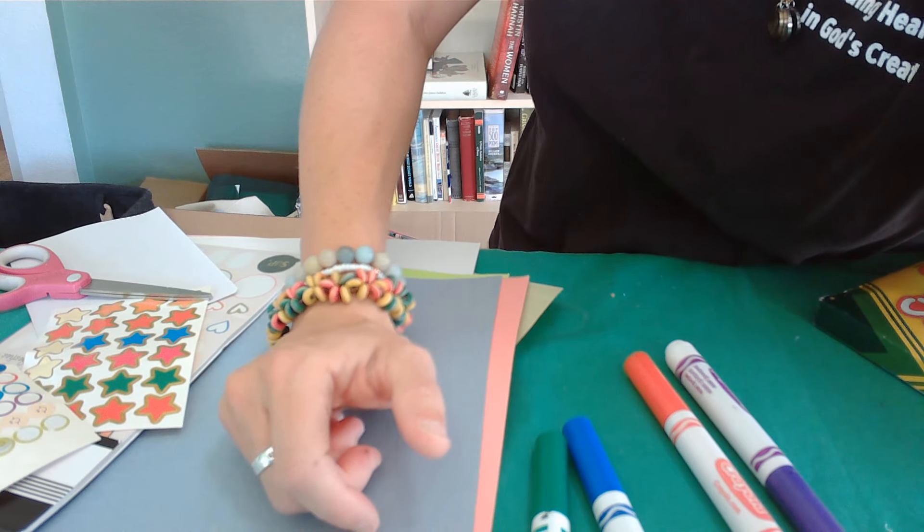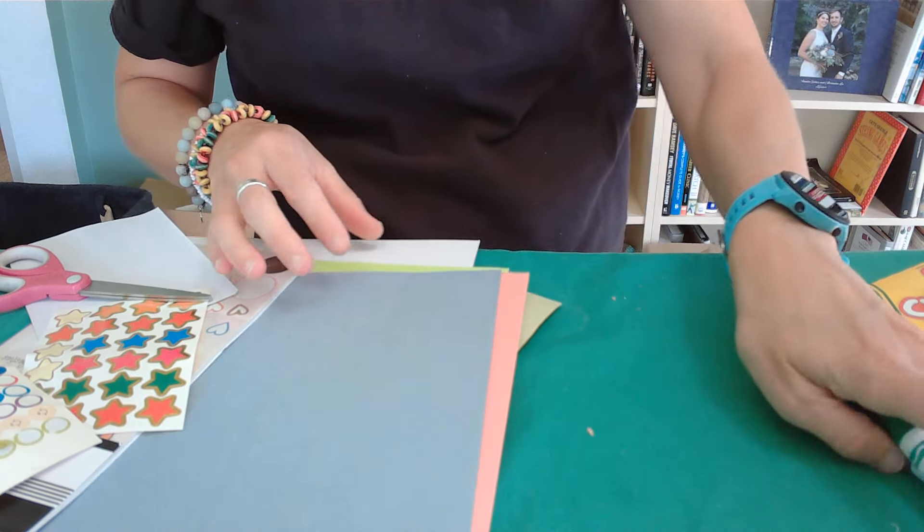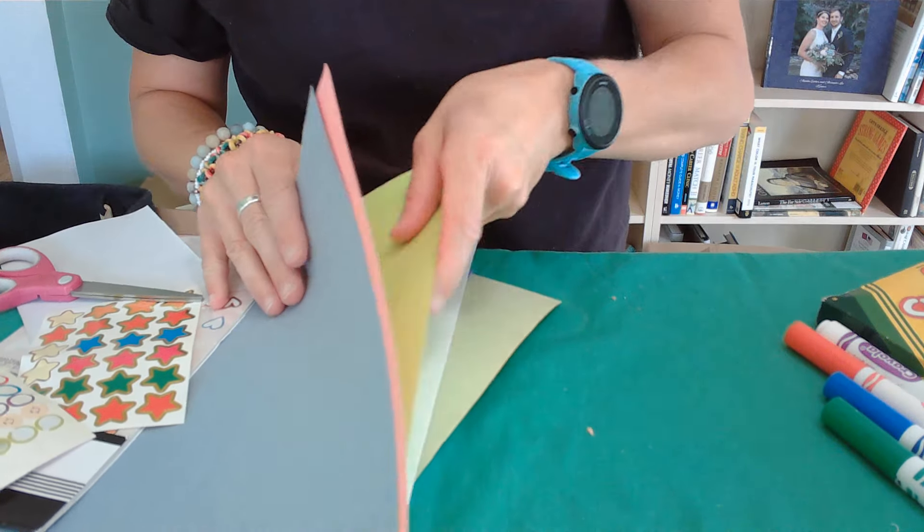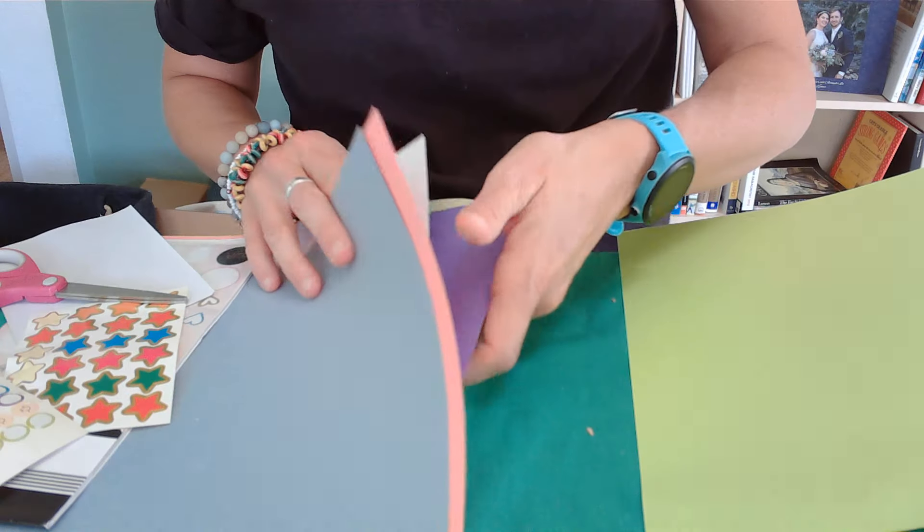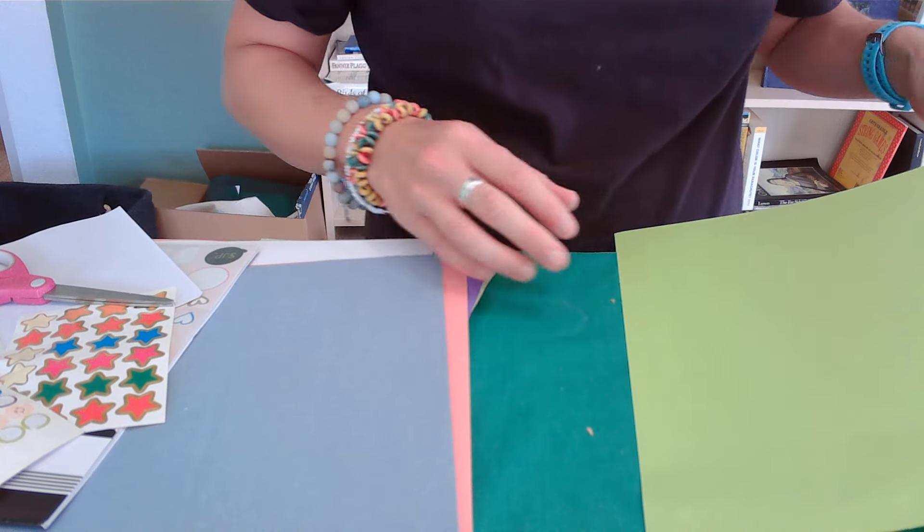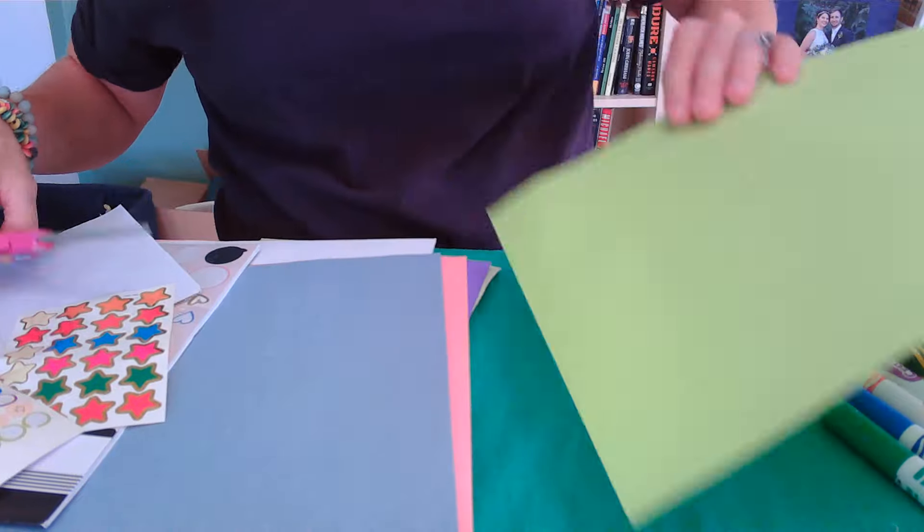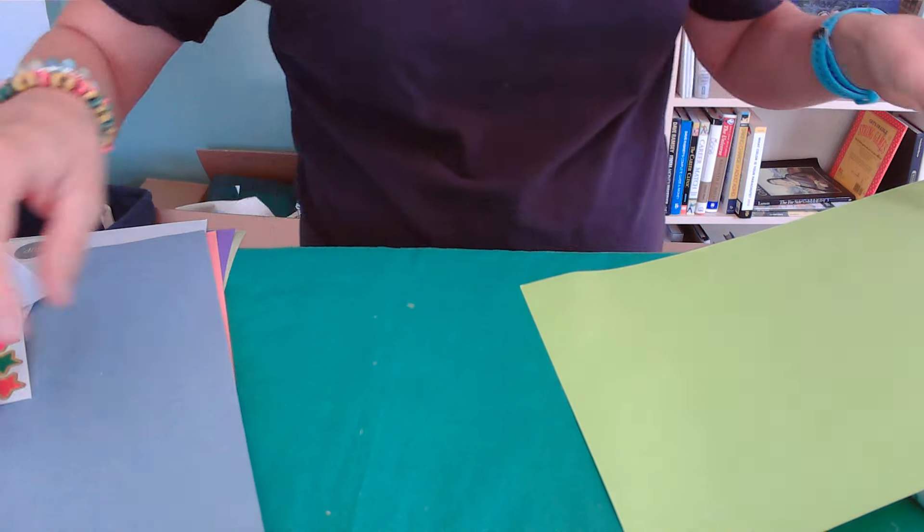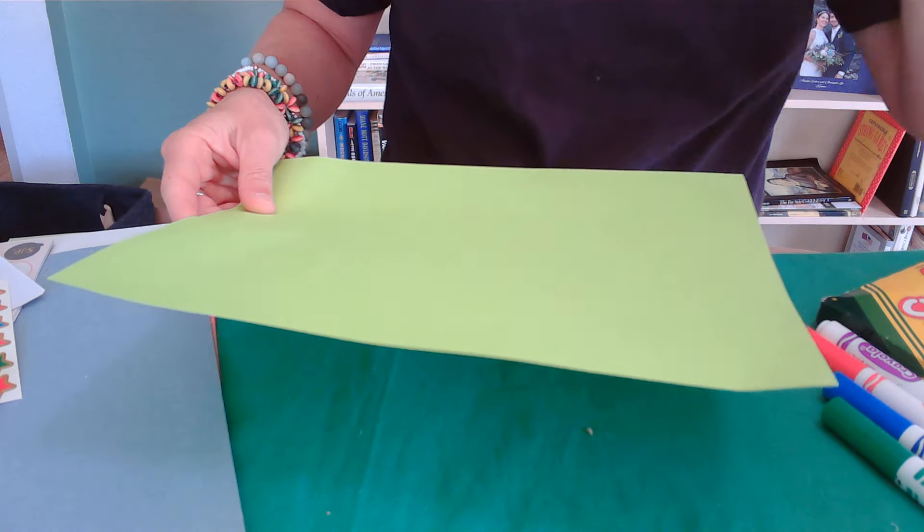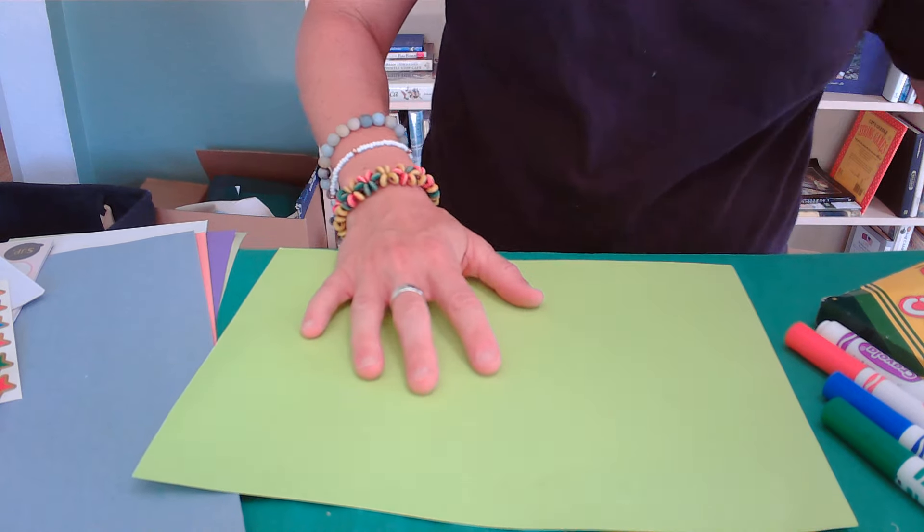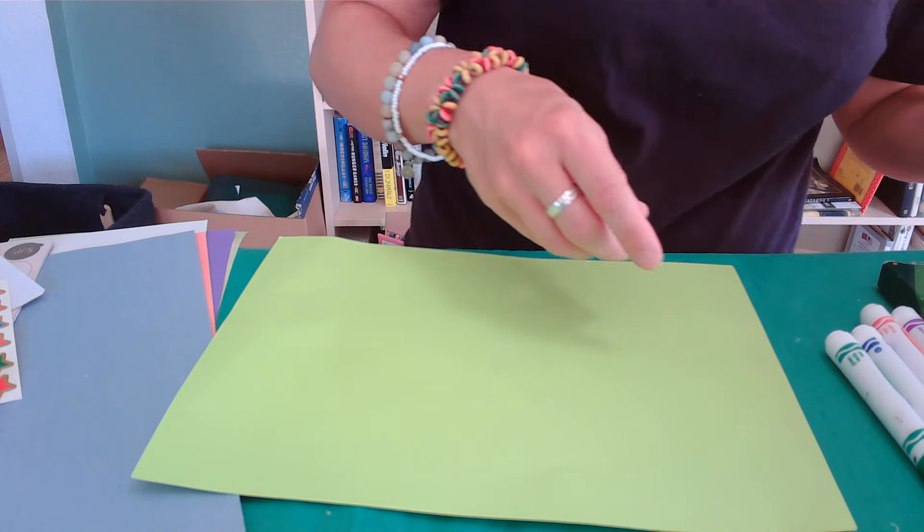And I would recommend maybe using some sort of darker paper for this one. I'm going to use, well this is clearly not dark paper. But the idea is we're going to create a little storm. If you have a larger paper, a larger paper might be extra awesome with this. But we are going to start with this guy.